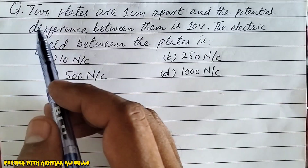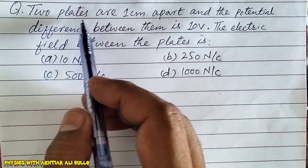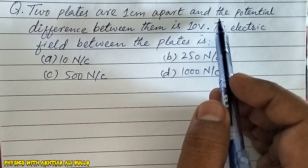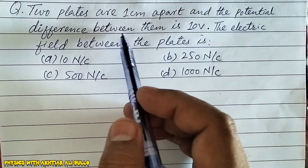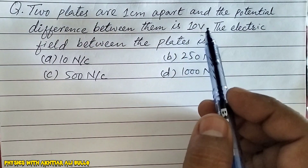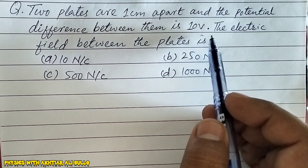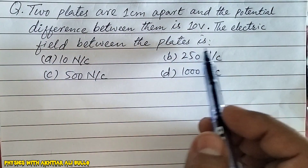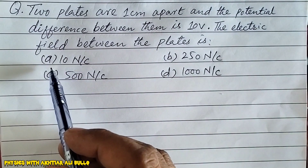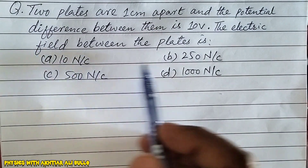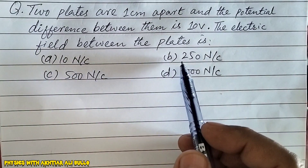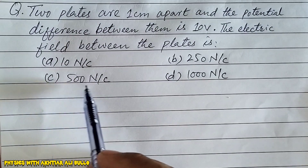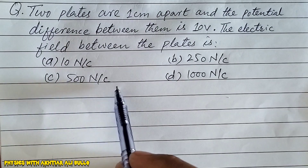The question is: two plates are one centimeter apart and the potential difference between them is 10 volts. The electric field between the plates is: a) 10 Newton per coulomb, b) 250 Newton per coulomb, c) 500 Newton per coulomb.